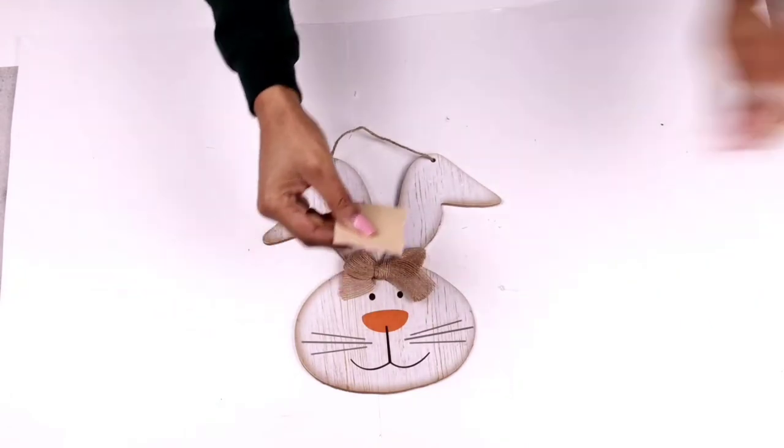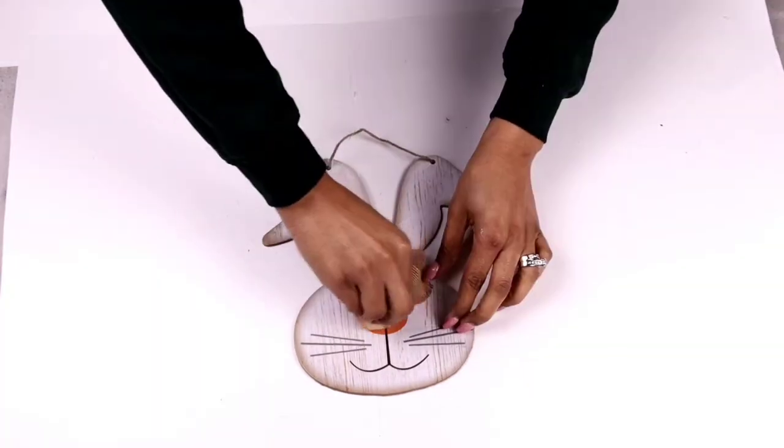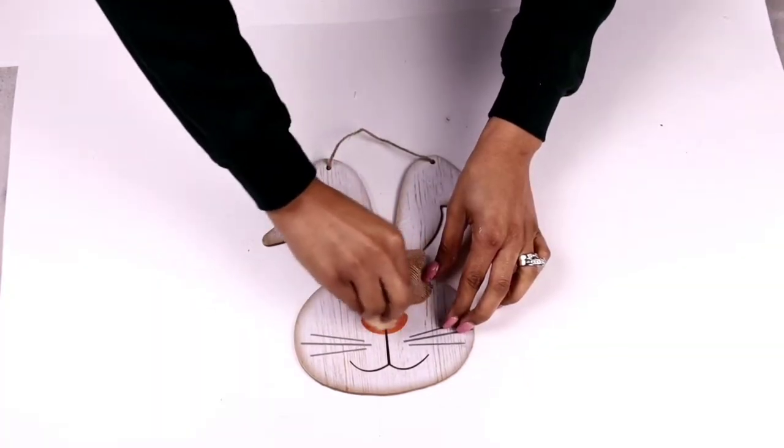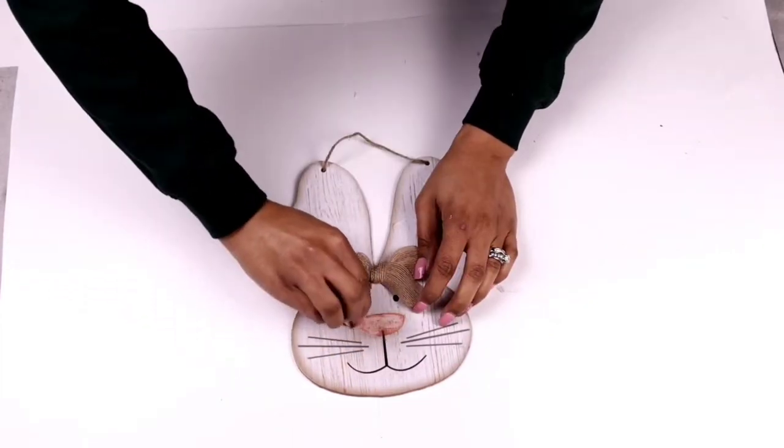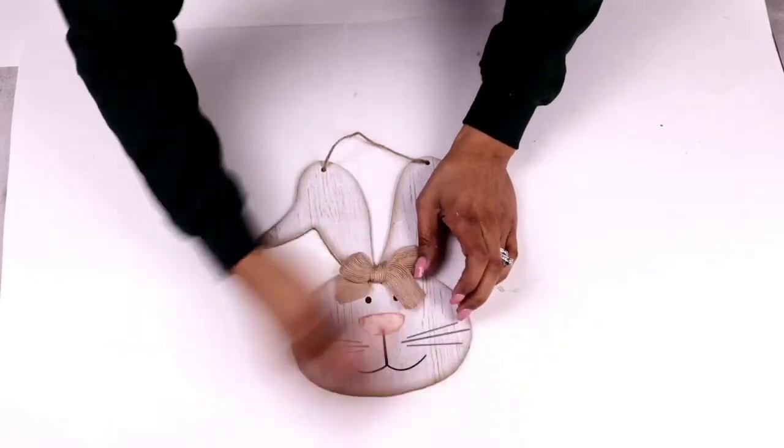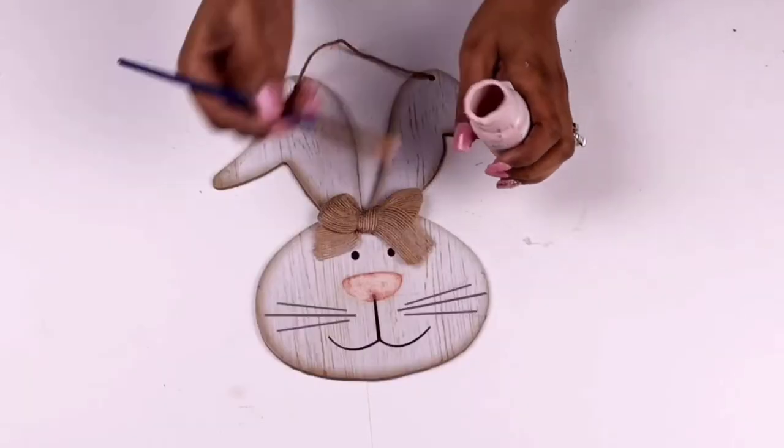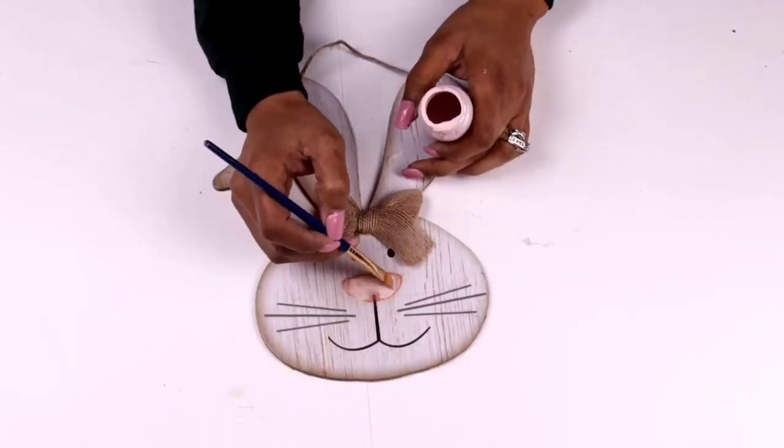The first thing I'm going to sand is going to be the bunny's nose. I didn't want it orange, I wanted to soften it up just a bit. So I'm going to sand off most of the orange from the nose and then I'm going to go in with pink. Sanding this was definitely a good idea and the pink worked out very well.